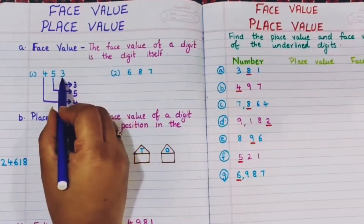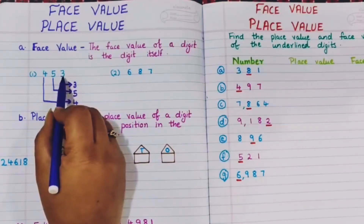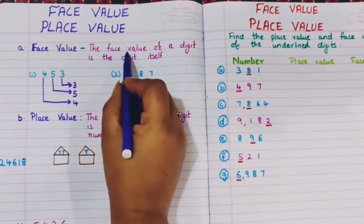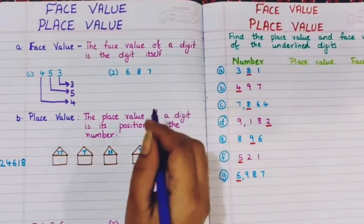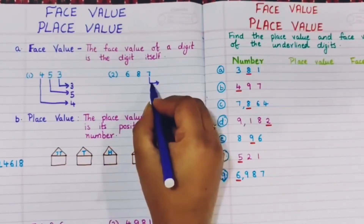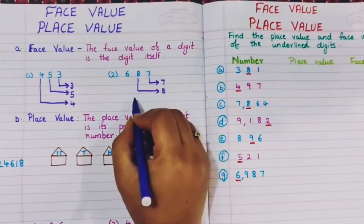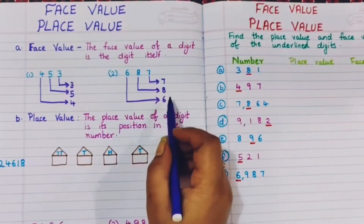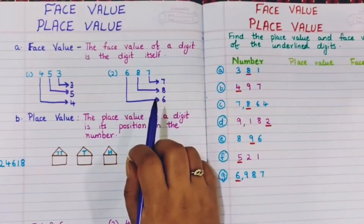The face value of 4 is 4 itself. So the face value of a digit is the digit itself. If I want to know the face value of 9, the face value will be 9 itself. Let's do one more problem: 687. The face value of 7 is 7, the face value of 8 is 8, and the face value of 6 is 6.